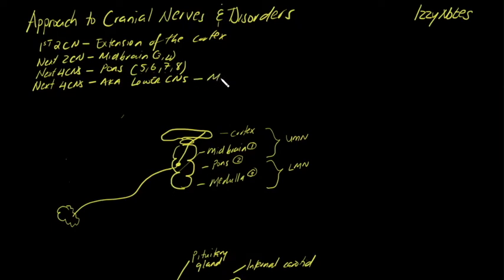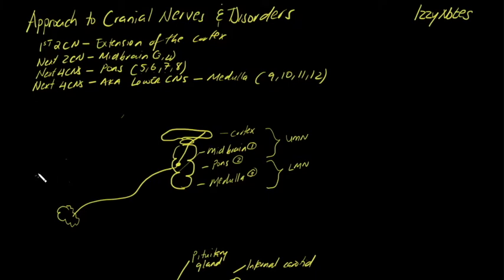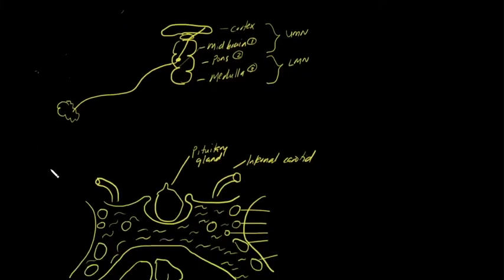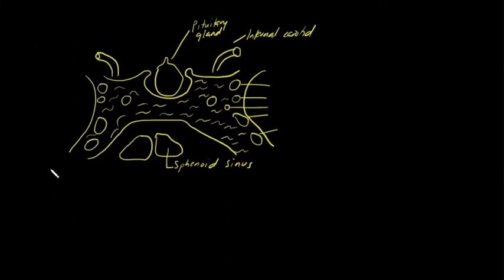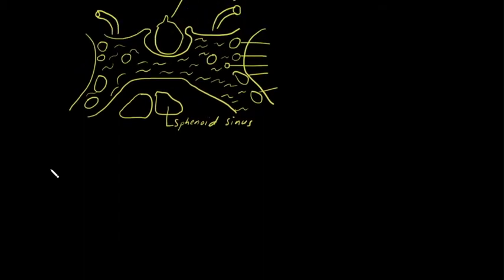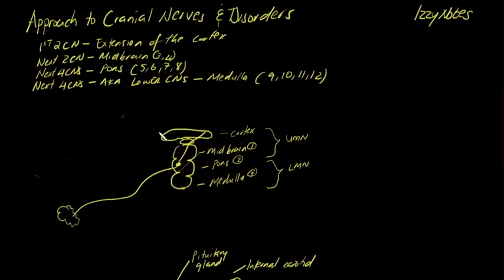The cranial nerves originating from the medulla are nine, ten, eleven, and twelve. This is really useful for localization — it is very important that you take note of this as we cover more of these pathologies.